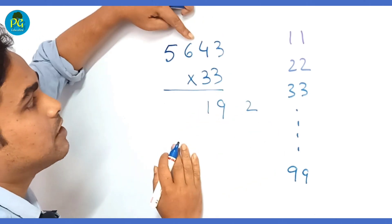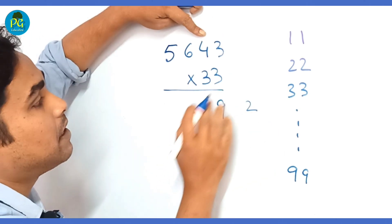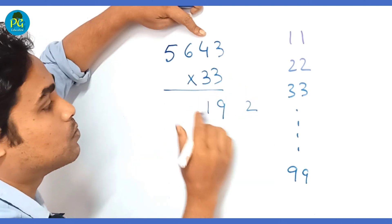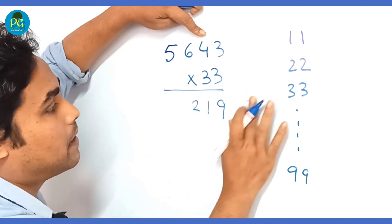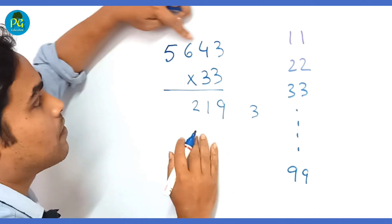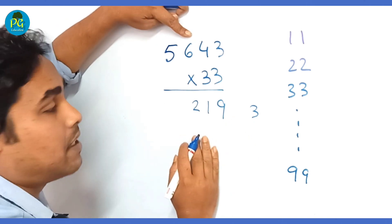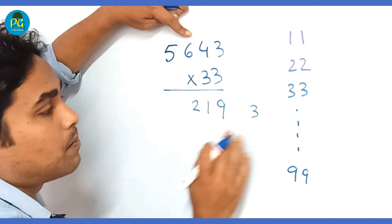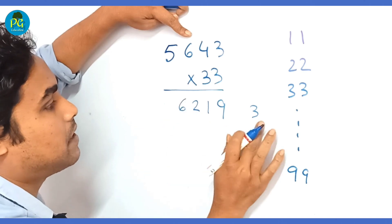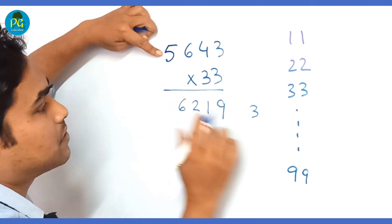5 plus 6 is 11, 11 into 3 is 33 plus 3 is 36, 3 in hand. Finally, 5 times 3 is 15 plus 3 is 18.